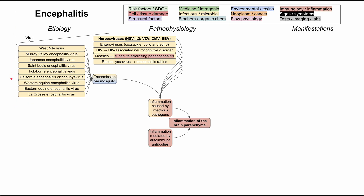The mosquito-borne viruses that can cause encephalitis include West Nile virus, Murray Valley virus, Japanese encephalitis virus, St. Louis encephalitis virus, tick-borne encephalitis virus, California encephalitis, Western equine encephalitis, Eastern equine encephalitis, and La Crosse encephalitis. Of all viral causes, herpes virus — and HSV1 and 2 in particular — are the most common causes of infectious encephalitis.